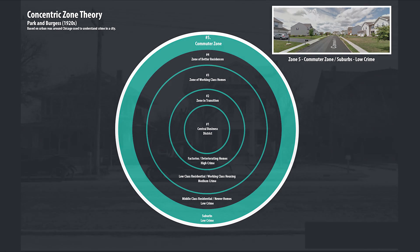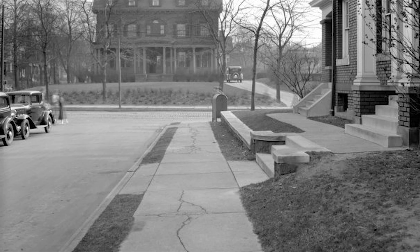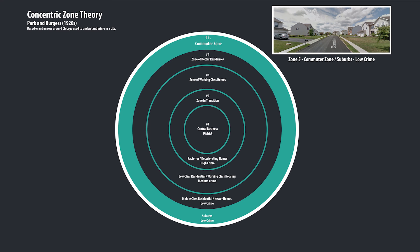Zone five is the commuter zone, or the suburbs. This has the lowest crime. Residents here rely on the automobile, streetcar, or railroads to transport themselves into the central business district. Since zone five is way out there, there's going to be less crime because criminals cannot make it out there — they probably don't have the means to walk all the way or buy a rail ticket or streetcar ticket out to the commuter zone. So these people were able to escape the city and its crime, and to live in the earliest suburbs.